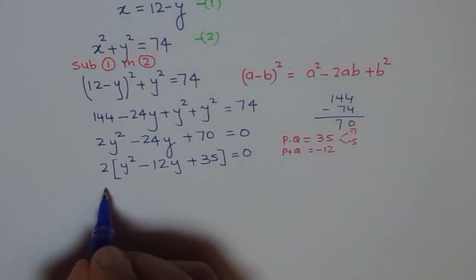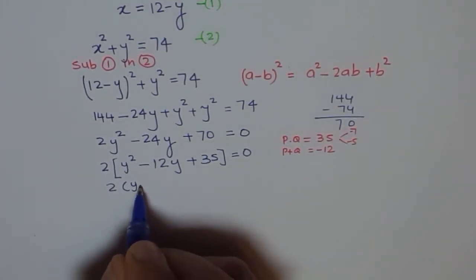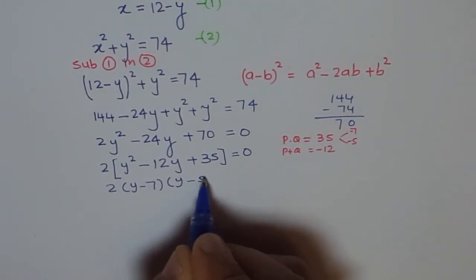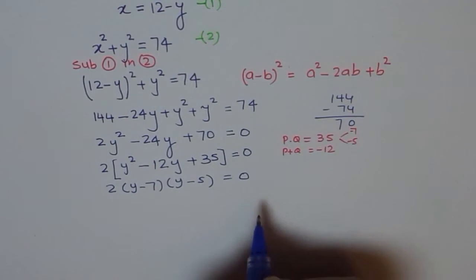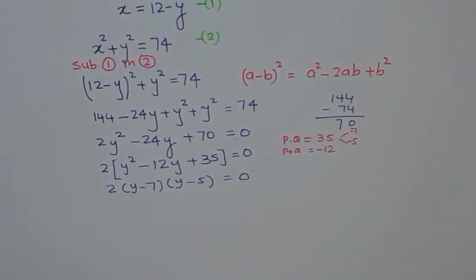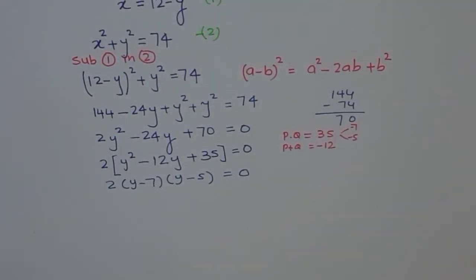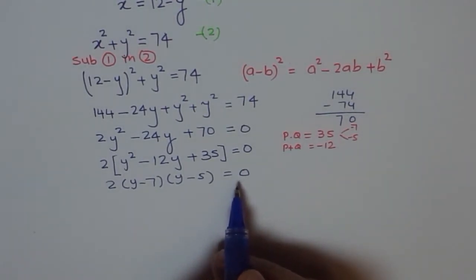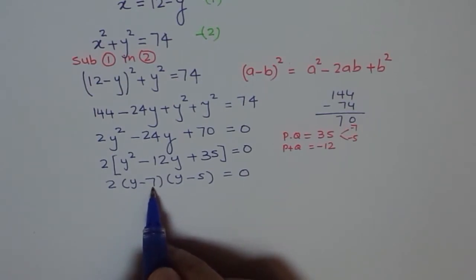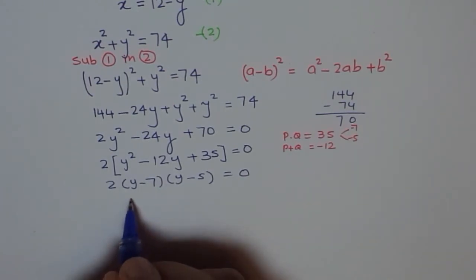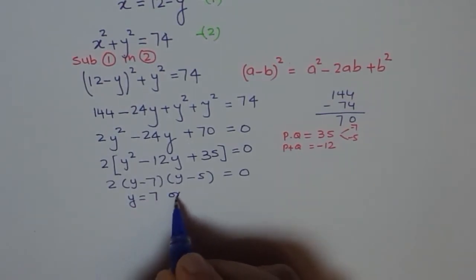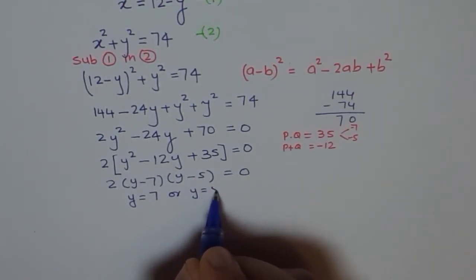So, we get 2 times y minus 7 times y minus 5 equals to 0. So, we have factored this out. Now, once we have factored, then we can find out what the value of y can be. So, to make this 0, y could be 7 or y could be 5. So, we have now our answer y equals to 7 or y equals to 5.